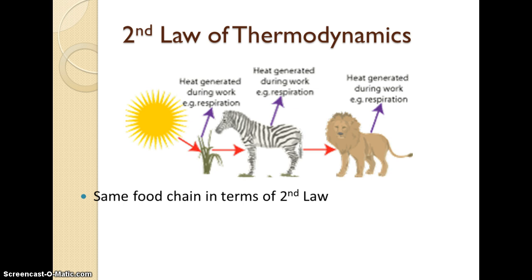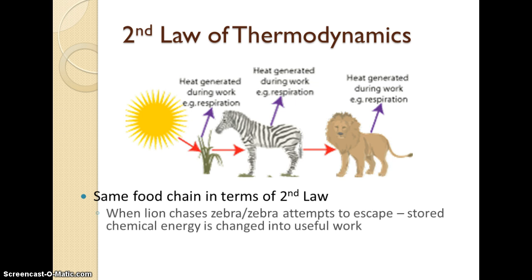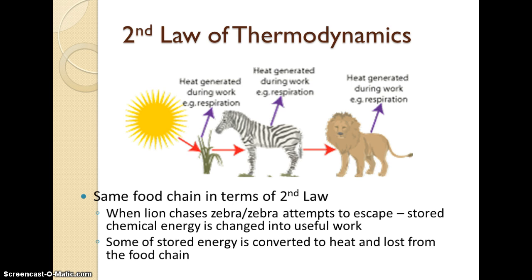If we look at our same food chain in terms of the second law of thermodynamics, as energy is passed from one level of the food chain to the next, we're losing heat at each of those levels. Plants generate heat through respiration, and the zebra and the lion generate heat through respiration as well. When the lion chases the zebra, they're both generating heat. That stored chemical energy — that glucose — is being changed into useful work, and the rest is either passed along the food chain or lost from it.